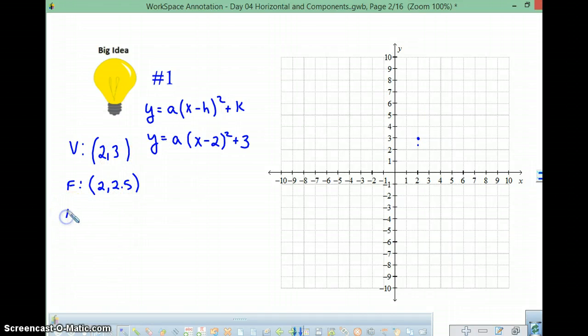Well, how can we use the focus to figure out what a is? Well, the first thing we can do is we can figure out the focal length. The focal length is just going to be the difference between the vertex and the focus. In this case, that's 1 half. 3 minus 2.5 is 1 half. We also know that the focal length is equal to 1 over 4a. So now we have an equation. We can solve for a. Cross-cancel: 1 times 4a is 4a, 2 times 1 is 2. Divide both sides by 4. You end up with a equals 1 half.